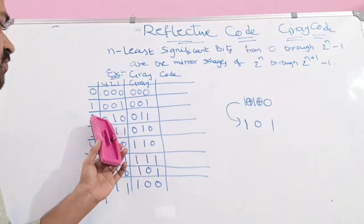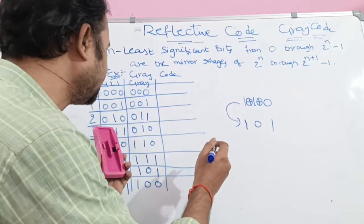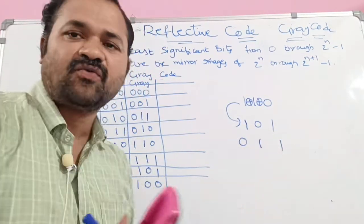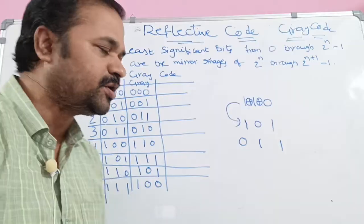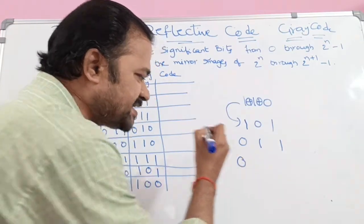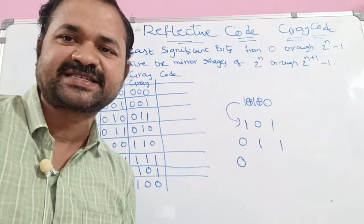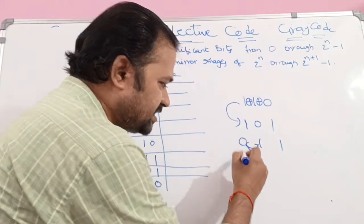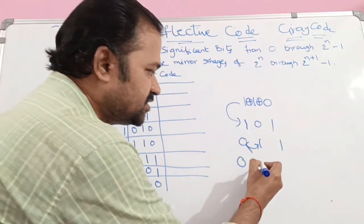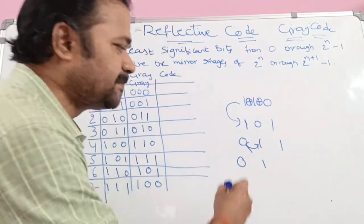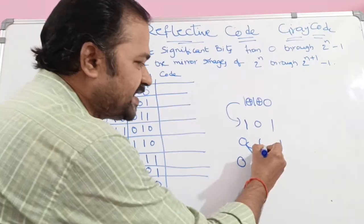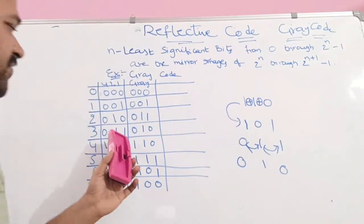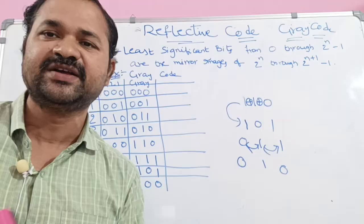Now let us take 011. For 011, we keep the MSB as it is. Then XOR of 0 and 1 is 1, and XOR of 1 and 1 is 0. So for 011, the Gray code is 010.